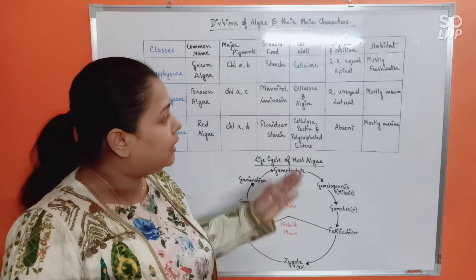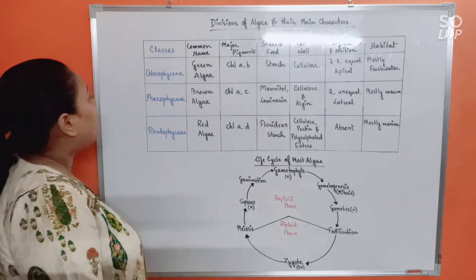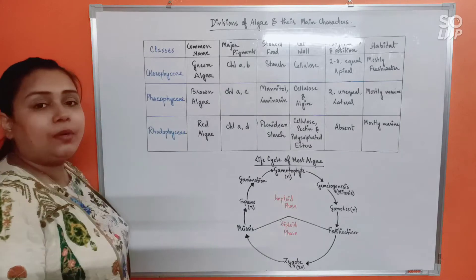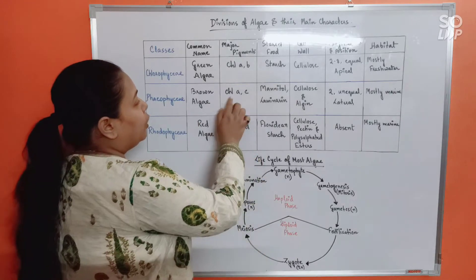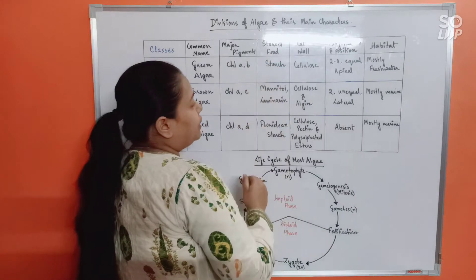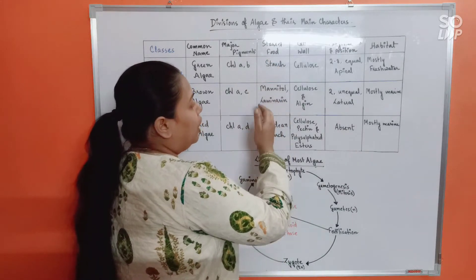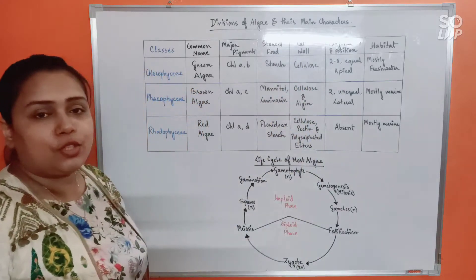Now coming to Phaeophyceae or brown algae. Here, on the other hand, chlorophyll a and c would be found. Stored food or reserve food material is mannitol or laminarin. Cell wall is made up of cellulose, and on the outside there is a gelatinous sheet of algin.